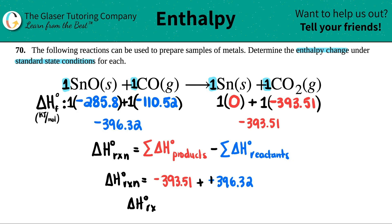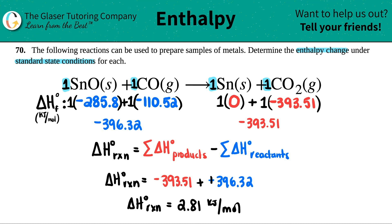So negative 393.51 plus 396.32 gives us 2.81. It's a little bit endothermic — still a positive value, but you're not absorbing that much heat. The units for delta H in the standard tables are always kilojoules per mole, so this is 2.81 kilojoules per mole of heat absorbed. Because it's positive, it's endothermic.